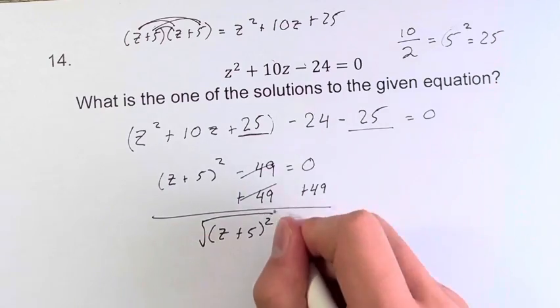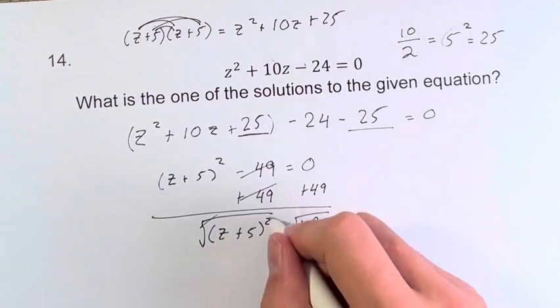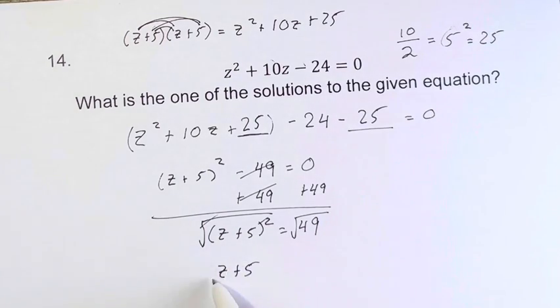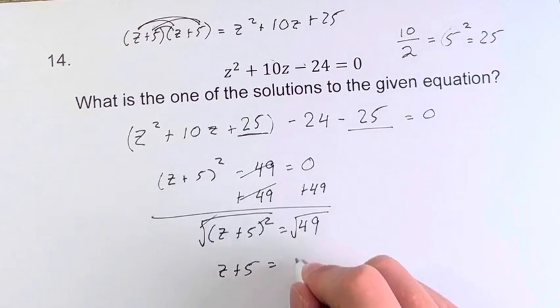What we're going to do is we're going to take the square root of both sides. It's going to cancel. We're just left with z plus 5, so the square root of something squared is always the thing itself, is equal to 7.